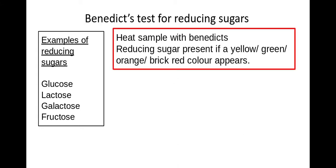The way this test works is you would heat the sample with Benedict's usually using a water bath and if a reducing sugar is present you'll get a yellow, green, orange or brick red solution and the colour will depend upon the concentration of reducing sugar present.